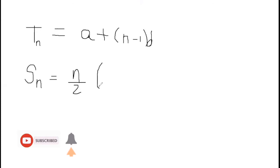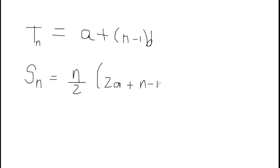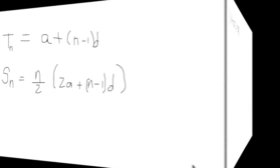Then we have the sum formula, which is N over 2, open bracket, 2A plus (N minus 1) times the common difference D. N remains the number of terms, A is the first term, and D is the common difference.